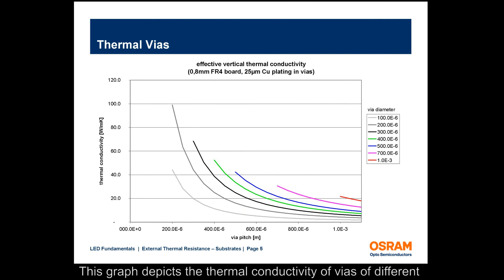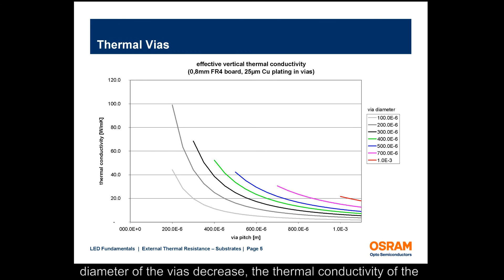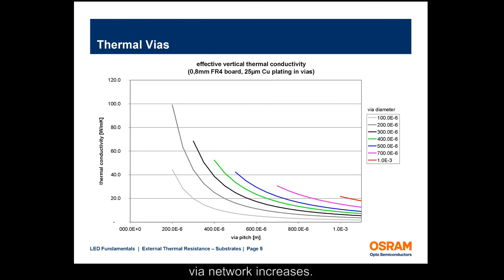This graph depicts the thermal conductivity of vias of different diameters and pitch. As the pitch between the vias and the diameter of the vias decrease, the thermal conductivity of the via network increases.